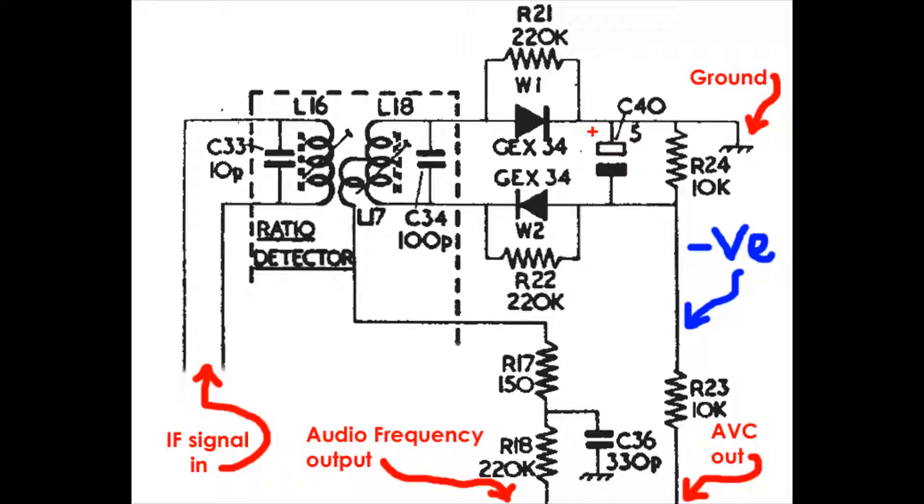This is the circuit diagram as shown in the datasheet. C33 and L16 form a tuned tank circuit that is tuned to the center frequency of the FM carrier wave.